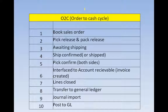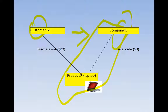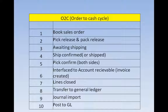The O2C Cycle starts with raising a sales order. Customer A raises a sales order to company B. The second step is that once a customer raises a sales order for a particular item, say a laptop, that laptop should first be manufactured, and then sent to the warehouse where it is collected.